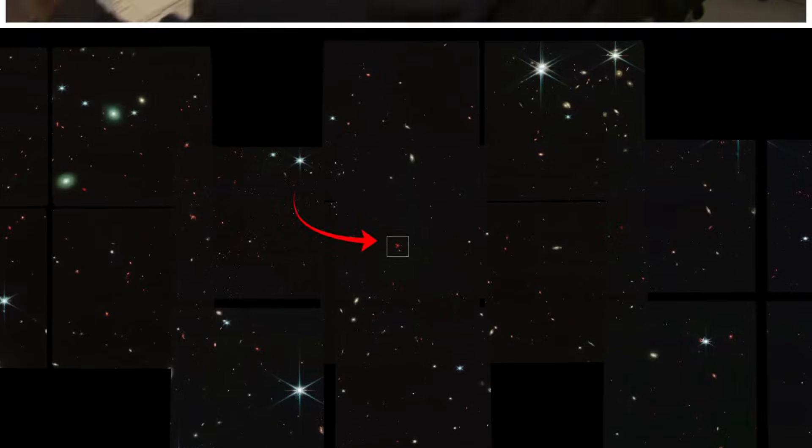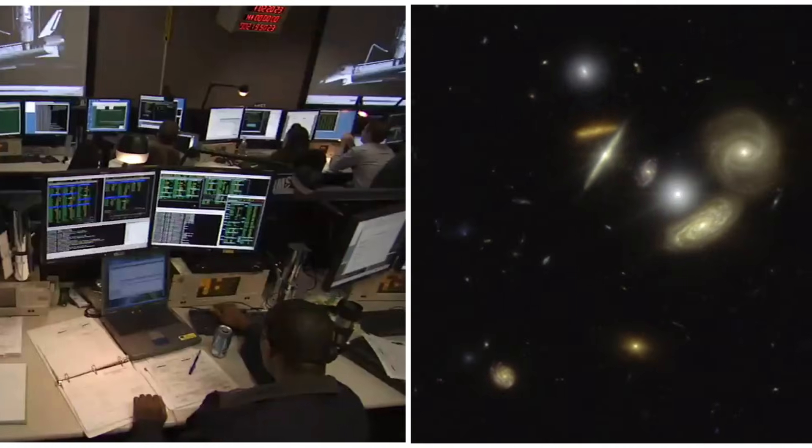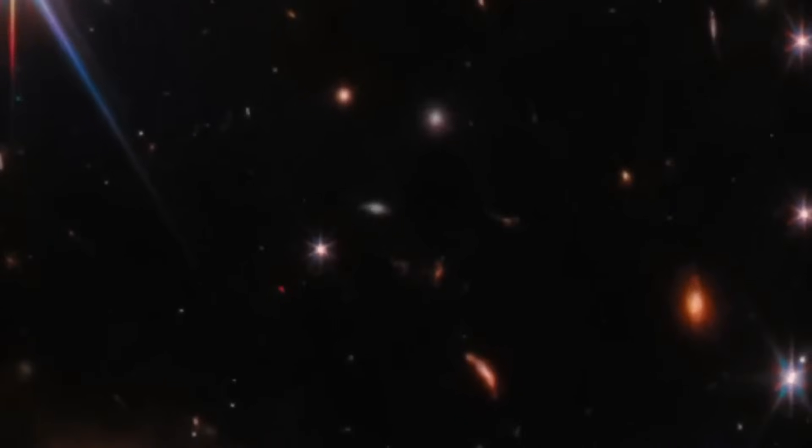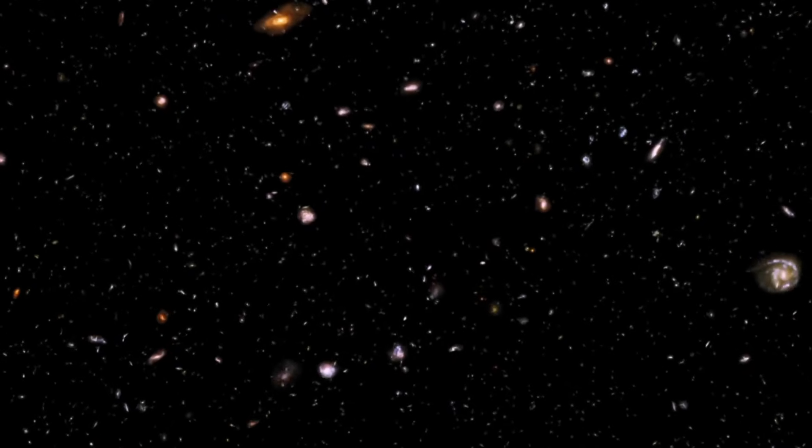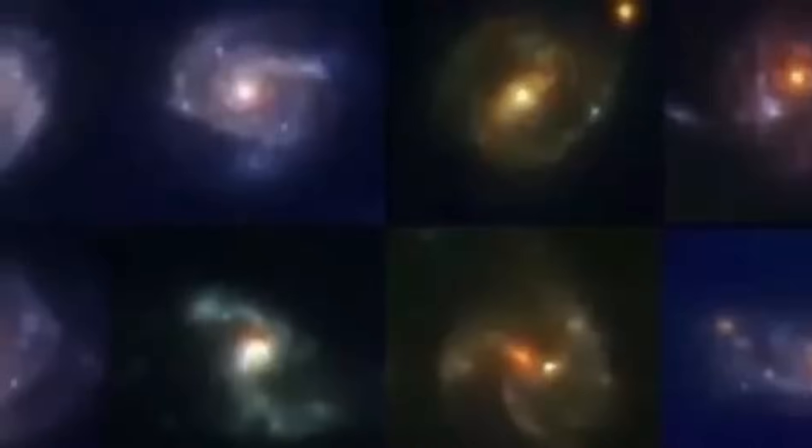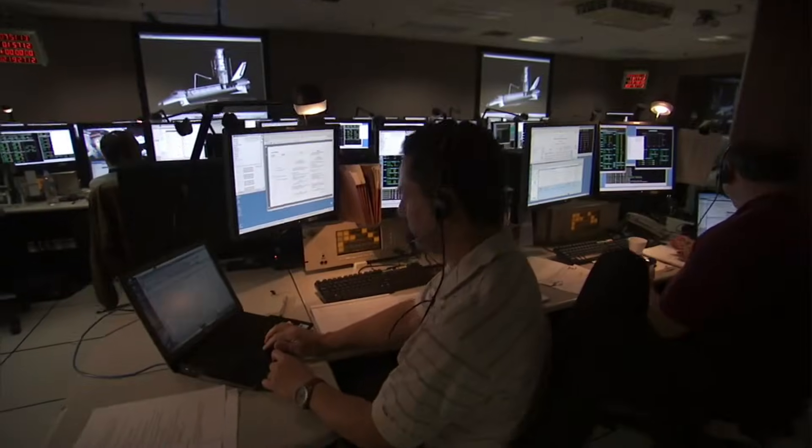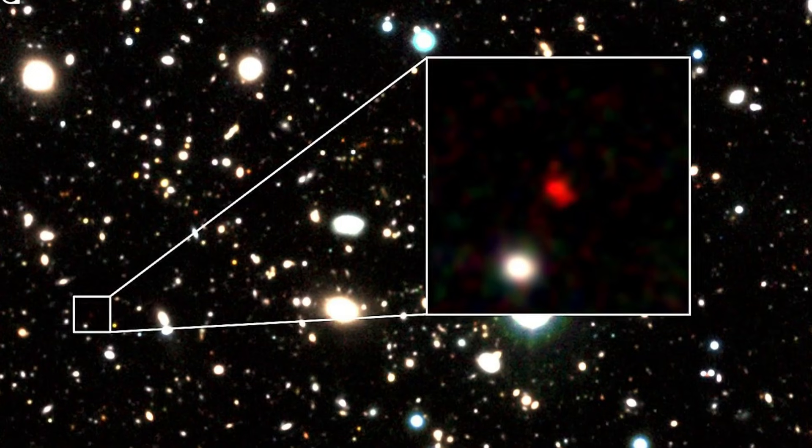The JWST's discoveries also invite us to consider the possibility of other dimensions or parallel universes. The concept of a multiverse, a vast collection of universes, each with its own unique set of physical laws and properties, has long been a topic of speculation in both science and philosophy. While the idea was once relegated to the realm of science fiction, recent advancements in cosmology and theoretical physics have given it a more solid foundation. The JWST's observations of anomalies in cosmic expansion, and the unexpected abundance of spiral galaxies in the early universe, could be interpreted as evidence of interactions between our universe and others.